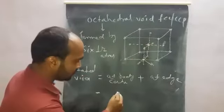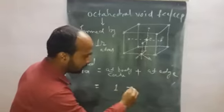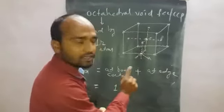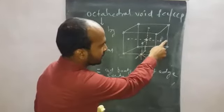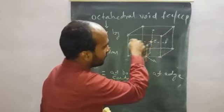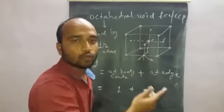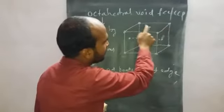Center is only one, so definitely it is 1 plus at each edge. How many edges? 1, 2, 3, 4, 5, 6, 7, 8, 9, 10, 11, 12. There are 12 edges.